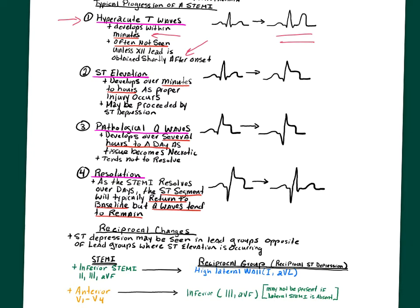Within minutes to hours, we have the classic finding of ST segment elevation. Occasionally this can be preceded by ST segment depression — T wave inversion indicating ischemia. Then as you start having injury, your ST segments become elevated. So you may see a sequence of hyperacute T waves, ST depression, and then ST elevation.